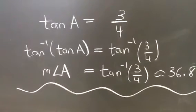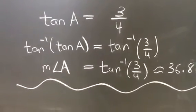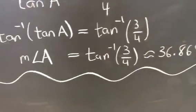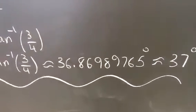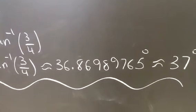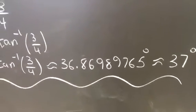The measure of angle A is going to equal the inverse tangent of 3 fourths. And I have to make sure my calculator is in degree mode. If I do, I type it out, then my calculator gives me this wacky decimal, 36.86989765 degrees, approximately.